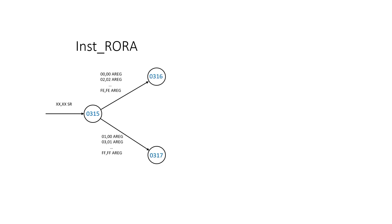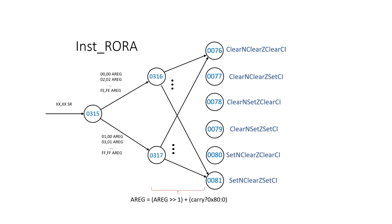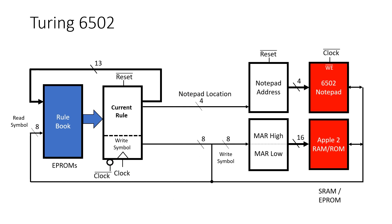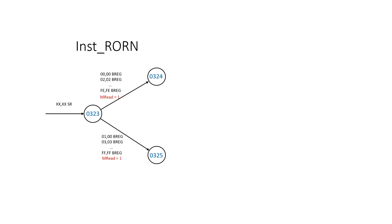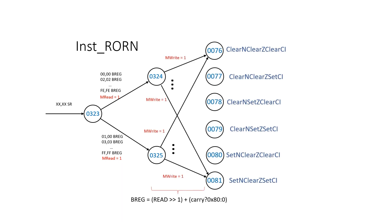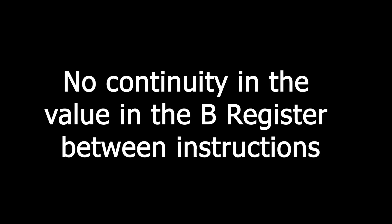Rule 316 represents carry clear and rule 317 represents carry set. In each of these rules, we have an arc for every possible value of A, and each arc writes back the value of A shifted right one with carry. We don't have a hardware unit that does the shift — it's all done with the rulebook, which is acting as a lookup table. To perform the rotate right from memory, we need to do a read, compute carry, and then a write. The reason we can use the B register is that at the start of each instruction we just assume the B register contains junk and can be overridden — there's no assumption of continuity between instructions for the value of B.